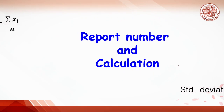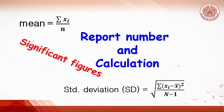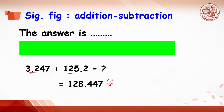Before the calculation section, let's review the principles of significant figure calculations, including addition, subtraction, multiplication, and division. For addition and subtraction, if we add two numbers and the calculator gives 128.447 with 6 significant figures, is this answer correct? Definitely it is false.